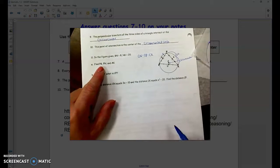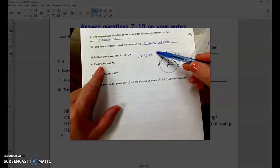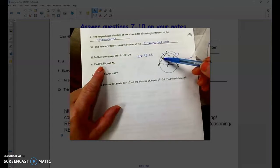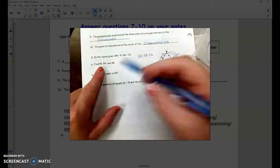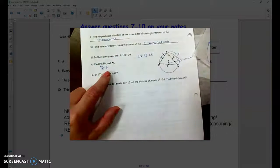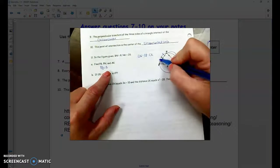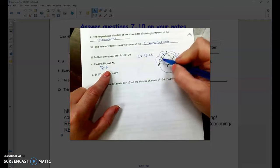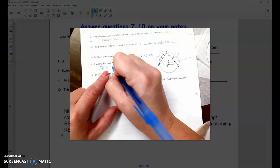And first we're asked to find P to B. Well remember, if this is a perpendicular bisector, point B is a midpoint. These two are the same lengths, so B to N is 8, B to P is also 8. So we could write PB equals 8. PN would be that whole side, which is simply 8 plus 8, which is 16.